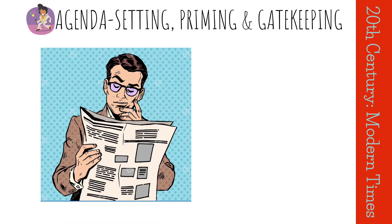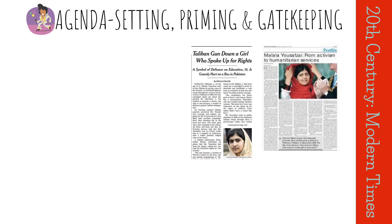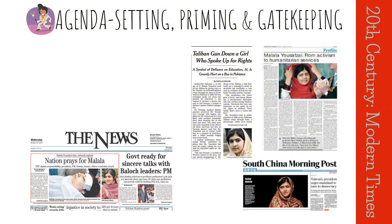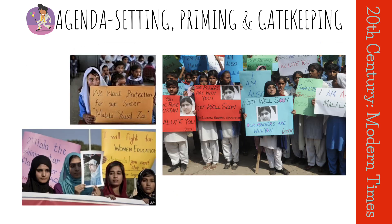In addition to agenda setting, priming, and gatekeeping, the media can also influence our thoughts and opinions in other ways. For example, the media can use framing to influence how we see an issue. Framing is the way in which an issue is presented to the public, and the way that an issue is framed can have a big impact on how people think about it.